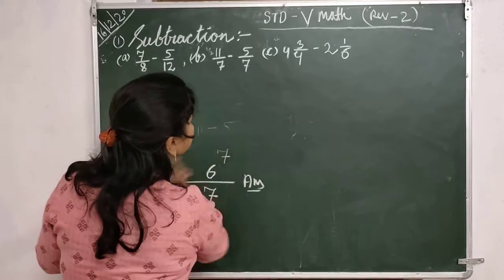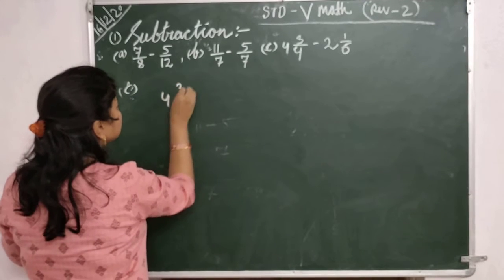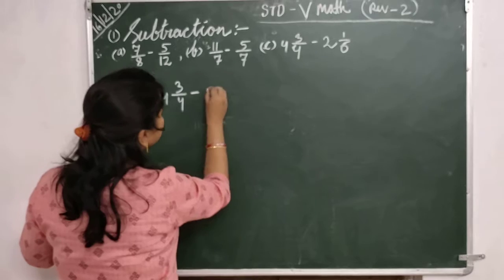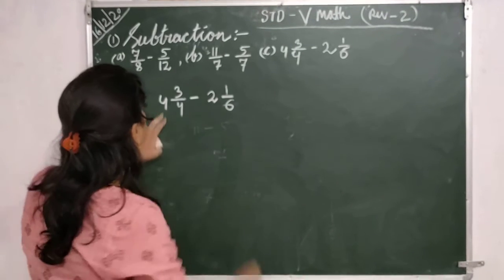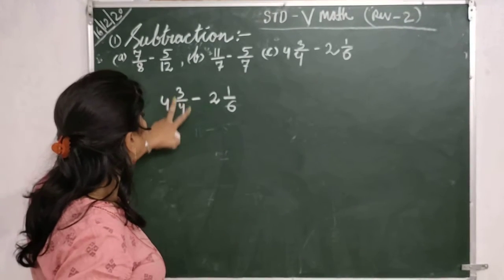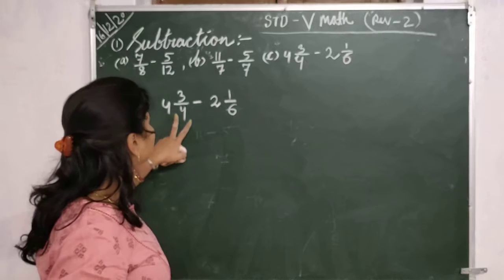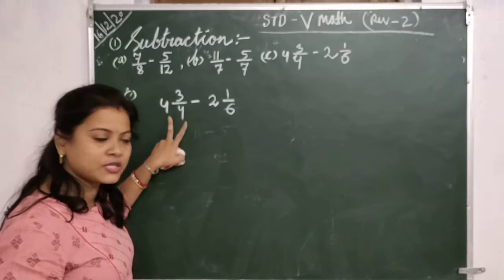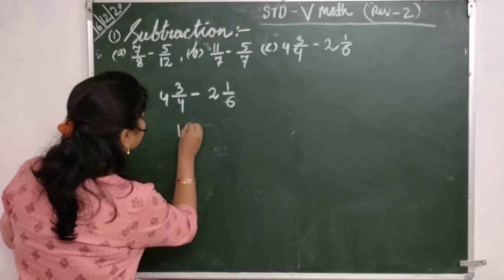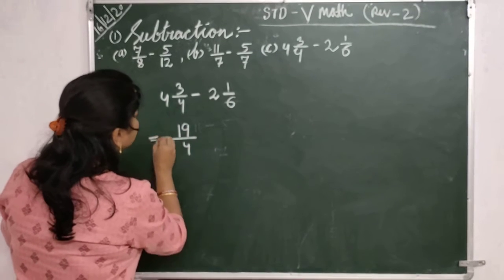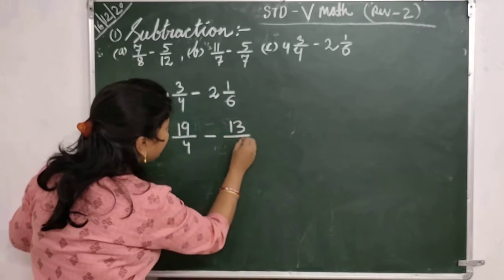The next one is 4 and 3 by 4 minus 2 and 1 by 6. Children, here 4 and 2 are whole numbers and 3 by 4 and 1 by 6 are fractional numbers, so it is a mixed fraction. First we have to change this to a fractional number. So here 4 into 4 is 16, 16 plus 3 is 19, giving 19 by 4. Minus: 6 into 2 is 12, 12 plus 1 is 13, so here 13 by 6.